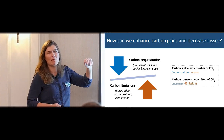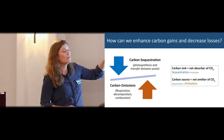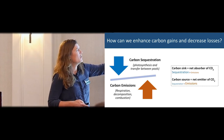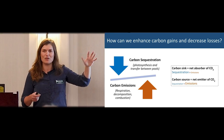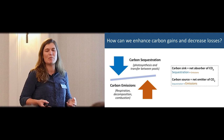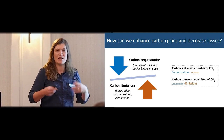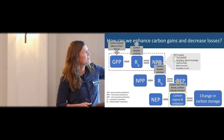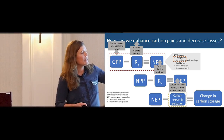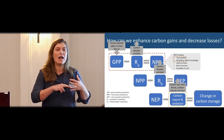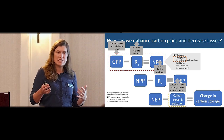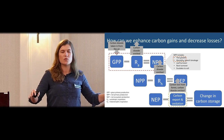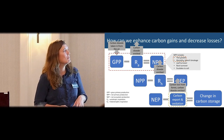First we have gross primary production — that's the total sequestration happening by living plants. You subtract respiration from autotrophs: as green plants metabolize and use the sugars and carbohydrates created through photosynthesis, they release carbon dioxide back out. The net is called net primary production or net primary productivity. That includes tree growth, mortality, branch breakage, turnover of leaves and needles, root turnover, and exudates of carbon from fine roots into the soil — the whole picture of carbon in the tree.